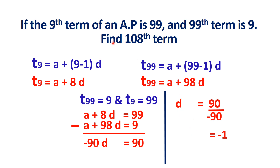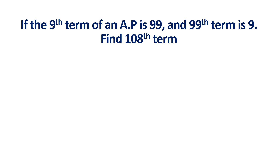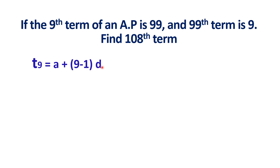The question asks for the 108th term. We have the common difference, but we also need the first term A to apply in the formula TN equals A plus N minus 1 into D. Using the equation T9 equals A plus 8D, we apply D equals minus 1: 99 equals A plus 8 into minus 1.